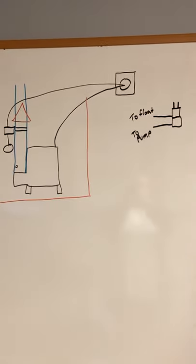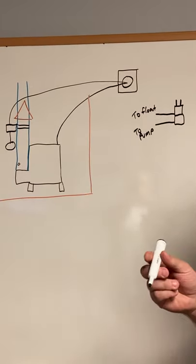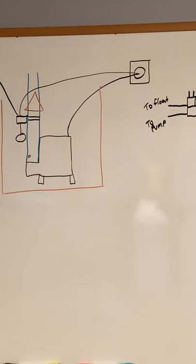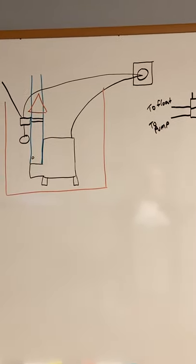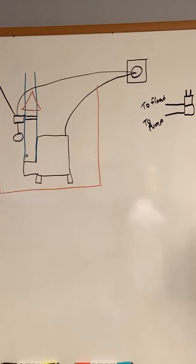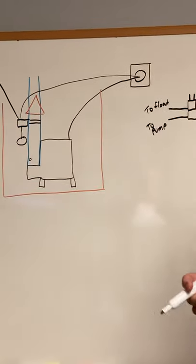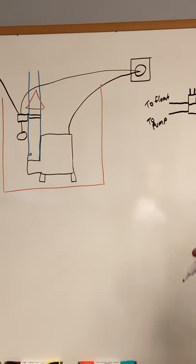So the biggest problem we see with sump pumps are these floats right here. The electric motor normally doesn't go out, however it can, but most of the problems we see are with the switches. Either the switch contacts get wet, they don't make or break anymore, if they get stuck, things like that.